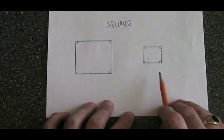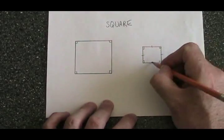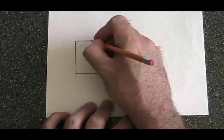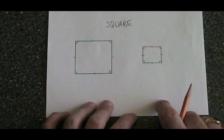A square has four equal sides. We can notify this by doing this. This is notation that shows us that the sides are equal in length.